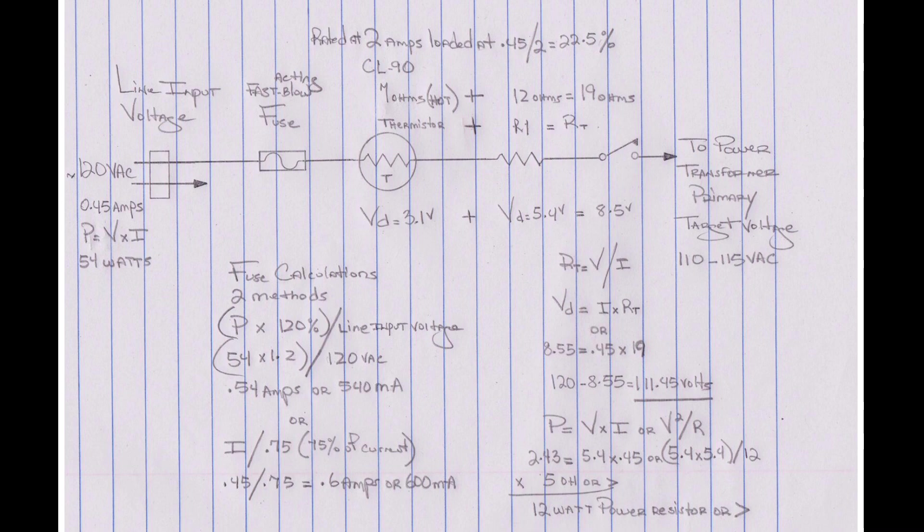And the second way, you can see I'm taking the current consumption of the radio, 0.45 amps, dividing by 0.75, which is 75 percent of the current. And that comes up to 0.6 amps. So not much difference. That's what I went with, the 600 milliamp fuse for this particular receiver.